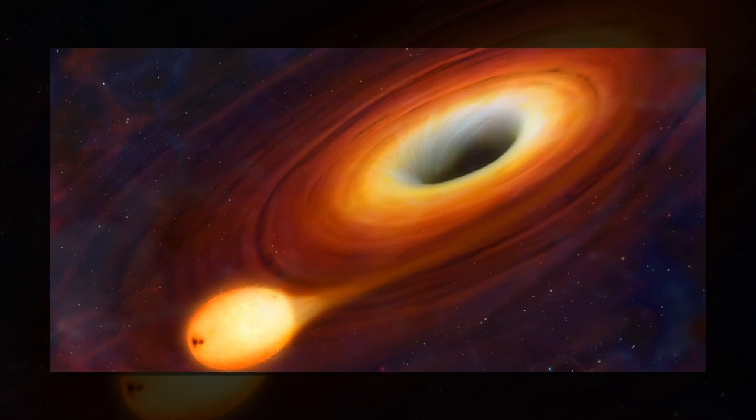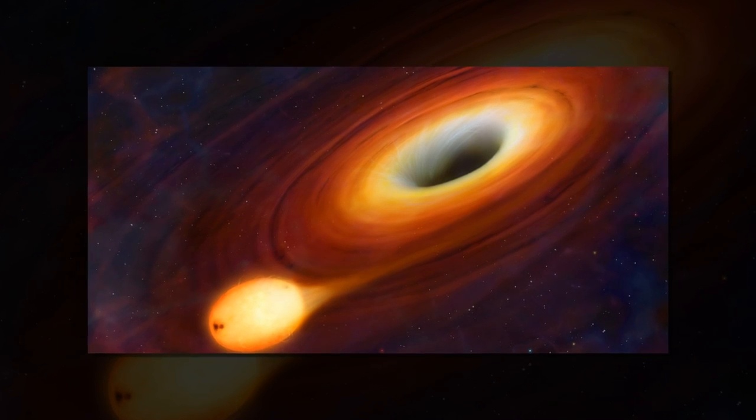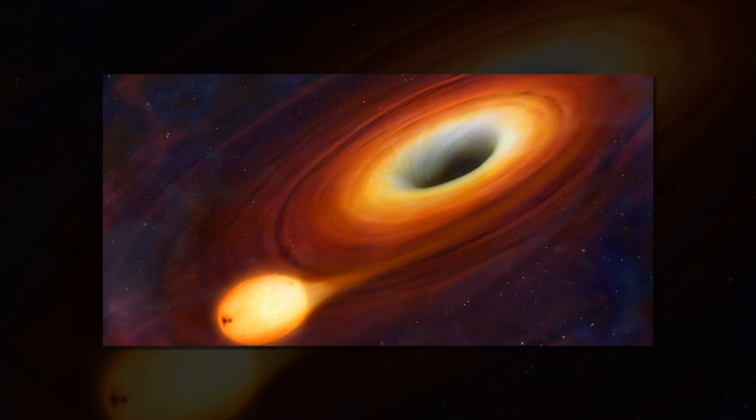The second, smaller black hole orbits in the inner edge of the accretion disk and has its own mini disk with an ultraviolet glow.